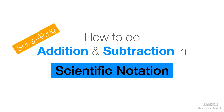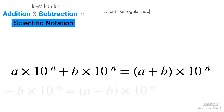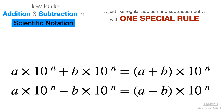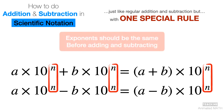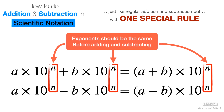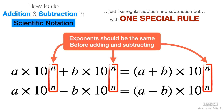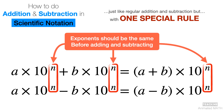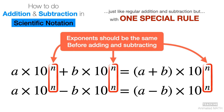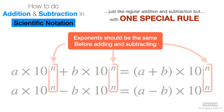The simple answer is that it is like regular addition and subtraction, but with one special rule: the exponent for base 10 should be the same for both numbers. The situations may be different, but remember that we will always be referring to this rule all throughout the video. The best way to gain mastery of this concept is to use it several times, so solve along with me.